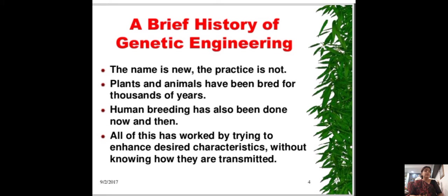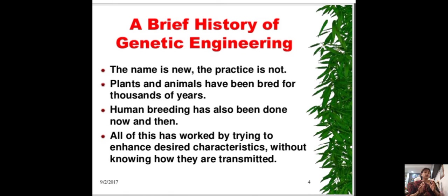Brief history of genetic engineering: the name is new but the practice is not. Plants and animals have been bred for thousands of years. Human breeding has also been done. All of these worked by trying to enhance desired characteristics without knowing how they are transmitted from one generation to another.